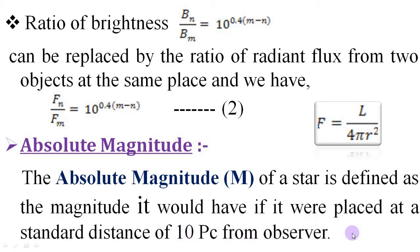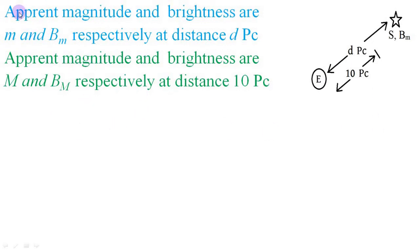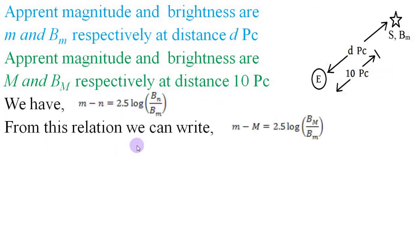To understand this, let us consider this situation. Here, apparent magnitude and brightness are small m and Bₘ respectively at distance d parsec of this star. But, if now the star be placed at a distance 10 parsec, its brightness and its magnitude would be changed. Let BM and capital M are the brightness and magnitude respectively at the distance 10 parsec, which is capital D. Now, we have this relation, from this relation we can write this. Here, we replace n by capital M and Bₙ by capital BM.